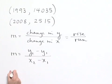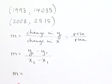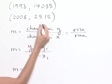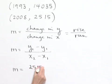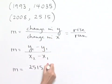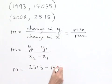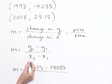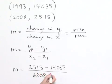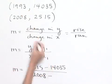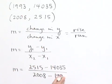To find our slope, we take the y value from our second point, which is 2,515, and subtract the y value from our first point, which was 14,035. We divide that by our second point's x value, 2008, minus the x value from the first point, which is 1993.